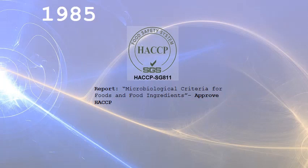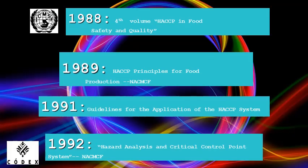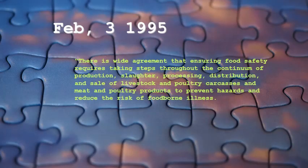1985 was a big year — the HACCP food system was approved by food regulation in America and around the world. From 1988 to 1992 they refined the HACCP system principles for food, with guidelines for application published in 1989. In 1992 it was ratified into the current system we still use today — some 26 years later. Then in 1995 there was wide agreement that ensured food safety across a whole range of food processing plants — for poultry, vegetables, dried food — and this is where HACCP really became mainstream across the world.